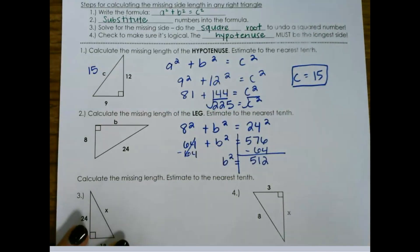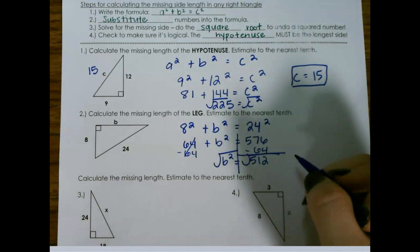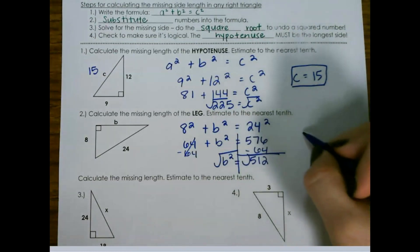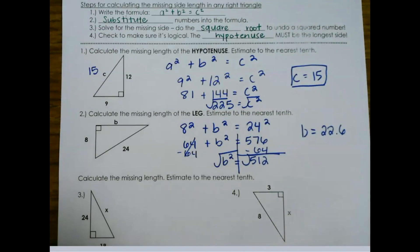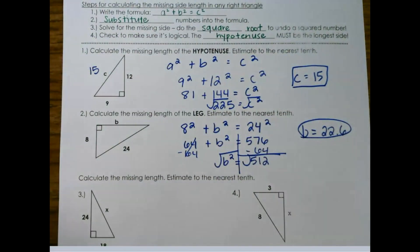And that equals b squared. So again, take the square root of that. It's not a perfect square, so it's going to give us an answer of 22.6 when I calculate that and round it to the nearest tenth.